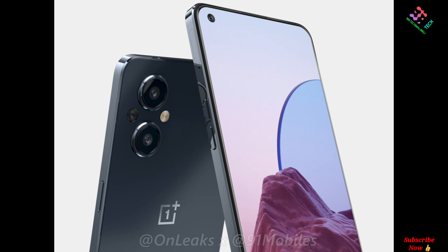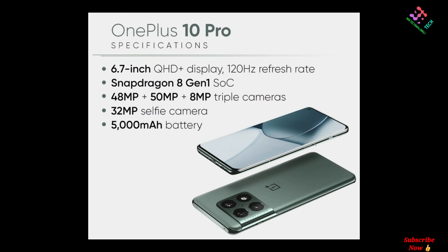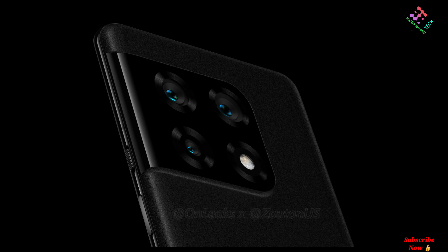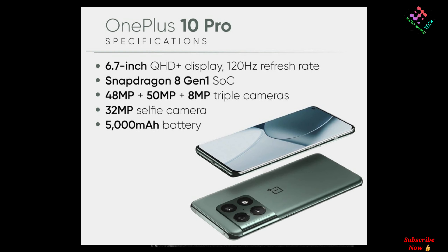The features of the OnePlus 10 Pro have leaked. It has a QHD Plus AMOLED display with a curved display and a high refresh rate. It has an 8th generation Snapdragon, 890-820 Pro. It has LPDDR5 RAM and UFS 3.1 storage. It has a main camera with 56 megapixels, an ultra-wide angle with 50 megapixels, a telephoto lens, and a selfie camera.